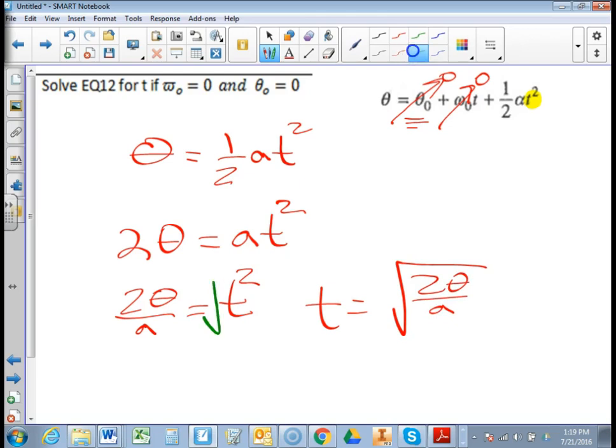And the last step when you have a square is to take the square root of both sides. And that means that t is going to be equal to the square root of two theta over a. Remember, what we did that last step was take the square root of both sides. And I decided to write the t first. So that would be your right answer.